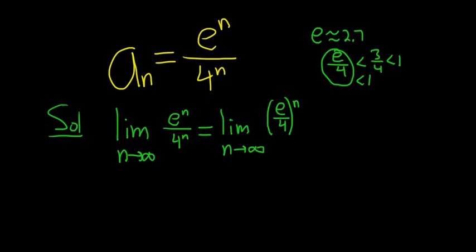So whenever you have a number that's less than 1 and you're raising it to the nth power, it gets closer and closer to 0. So the answer here is 0. So in this case, the sequence converges and this is called the limit of the sequence.